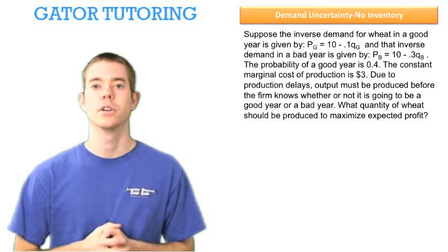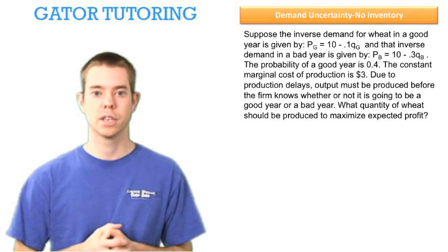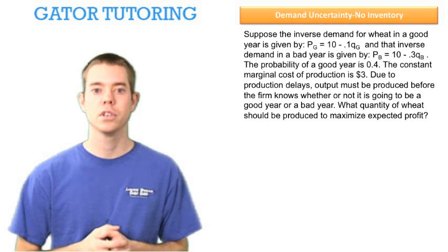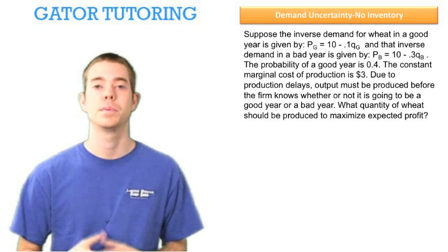We're told that inverse demand in a good year is given by 10 minus 0.1QG, and inverse demand in a bad year is given by 10 minus 0.3QB. The probability of having a good year is 40%, which means the probability of having a bad year must be 60%.